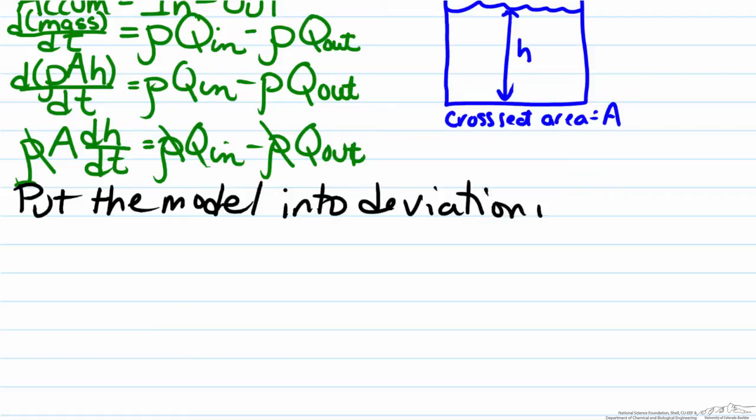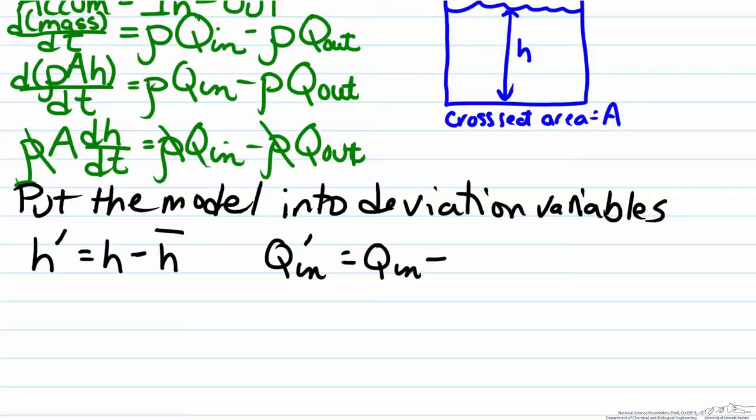So therefore we'll develop deviation variables which are defined as h', which will equal h, the height at a given time, minus h_bar, and we'll do the same thing for Q_in', which will equal Q_in minus Q_bar. Now we'll substitute in these deviation variable definitions into our differential equation.